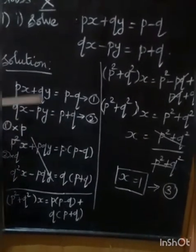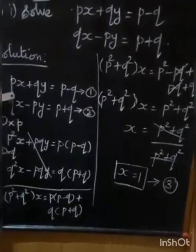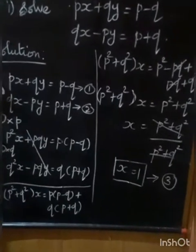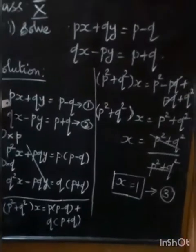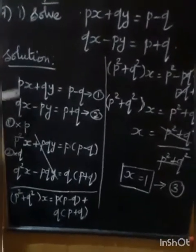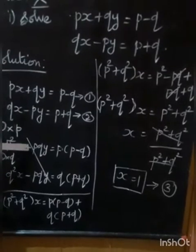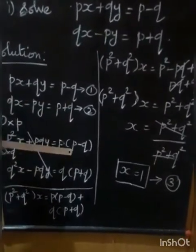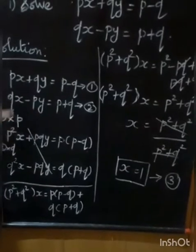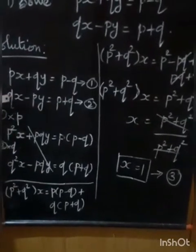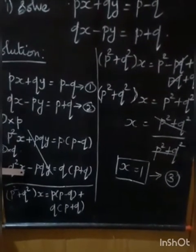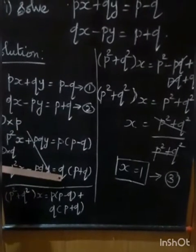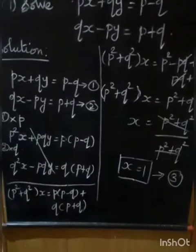First equation: PX plus QY equals P minus Q. Multiply the first equation by P: P squared X plus PQY equals P into P minus Q. Multiply the second equation by Q: Q squared X minus PQY equals Q into P plus Q.